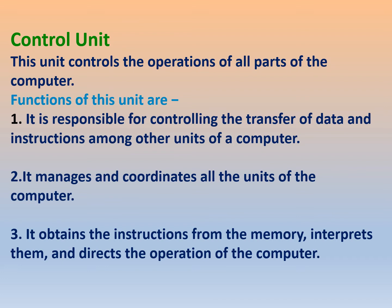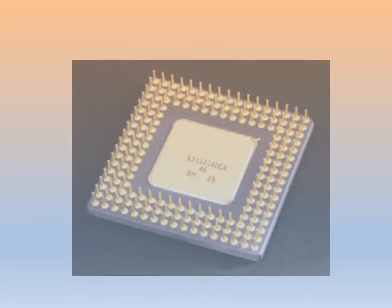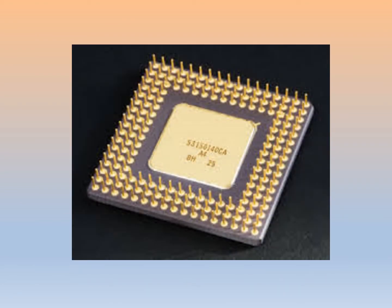The control unit controls the operations of all parts of a computer. It is responsible for controlling the transfer of data and instructions among the other units of the computer. Whenever we are giving any information, the control unit plays a major role. It manages and coordinates all the units of the computer. It obtains instructions from the memory, interprets them, and directs the operation of the computer. You can see the picture of the control unit here.